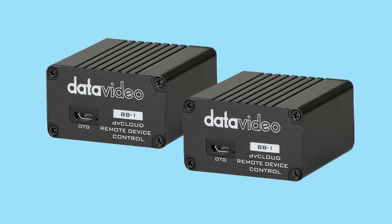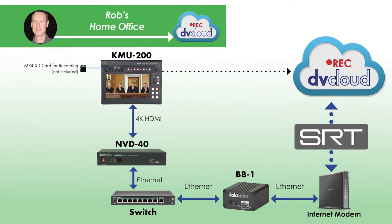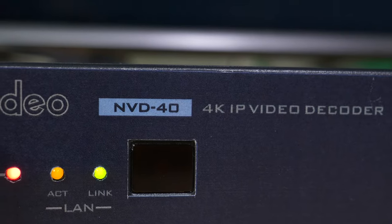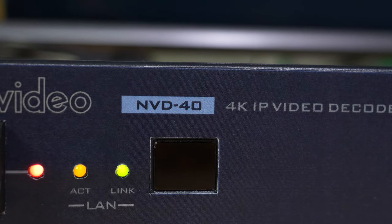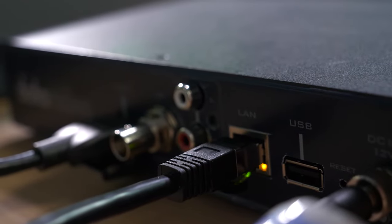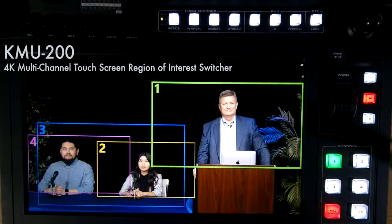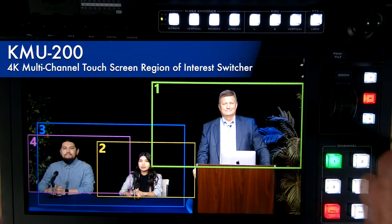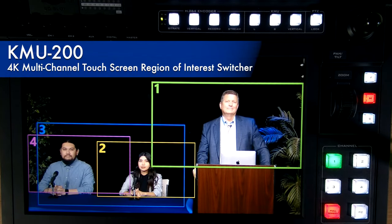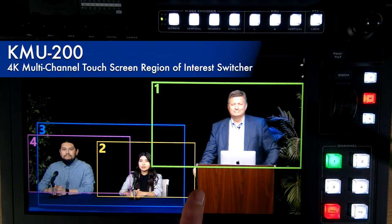Thanks, Craig. As you mentioned, you have a BB1 going to the cloud. I also have a BB1 under the table as well, which creates that secure connection through the cloud so I can take the H.265 audio and video signal and decode it using this brand new NVD 40. The embedded audio is coming in with the video signal — HDMI 2.0 — into the back of the KMU 200. This is the KMU 200, our ROI production switcher.